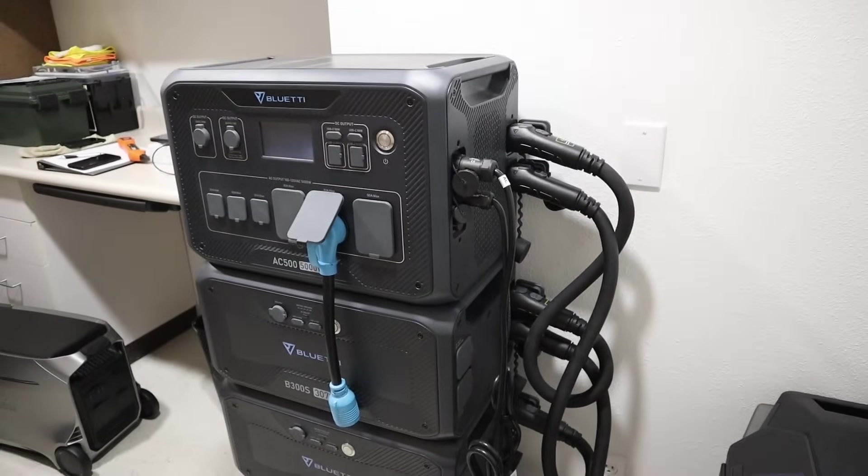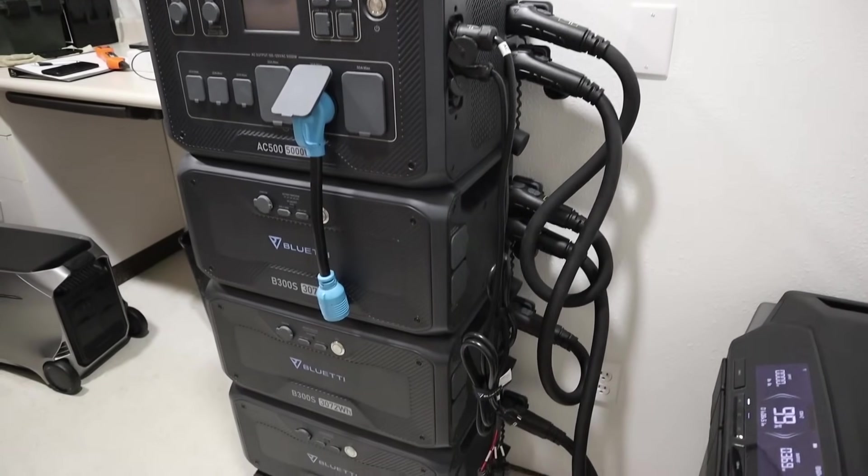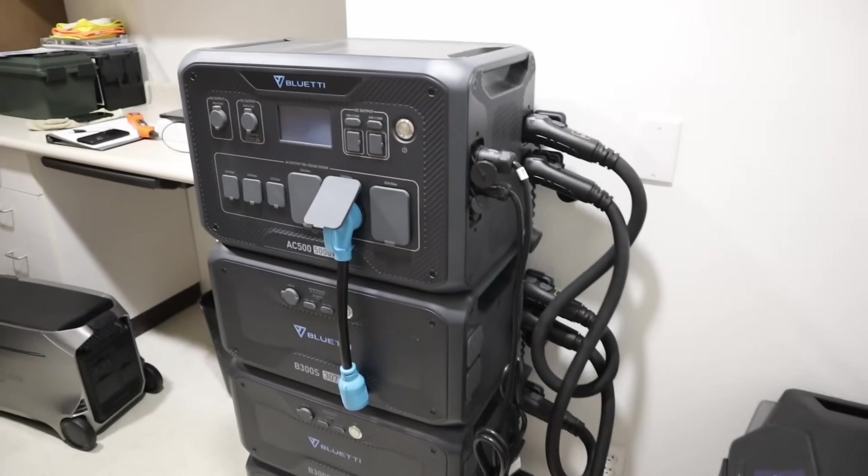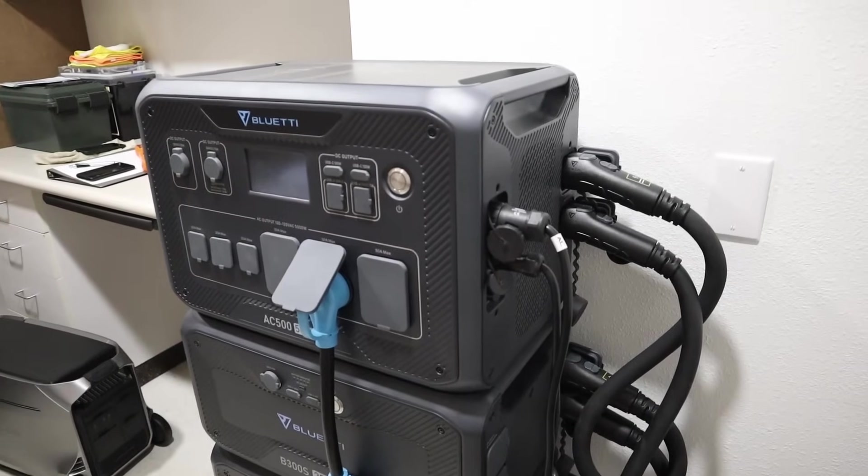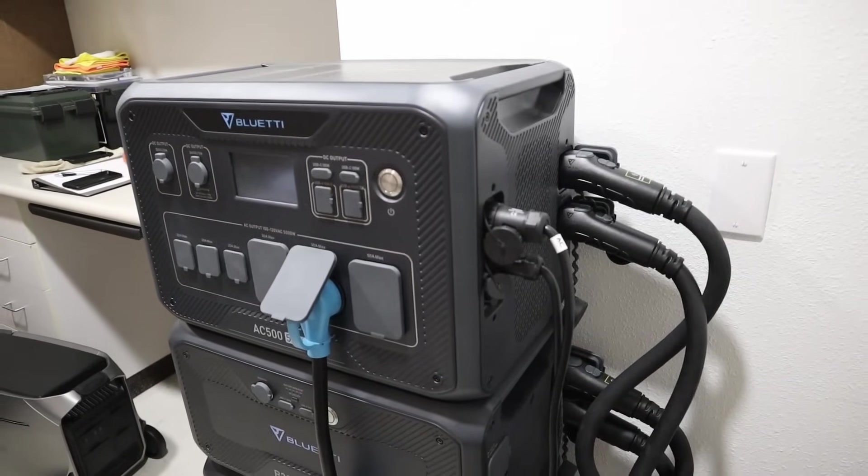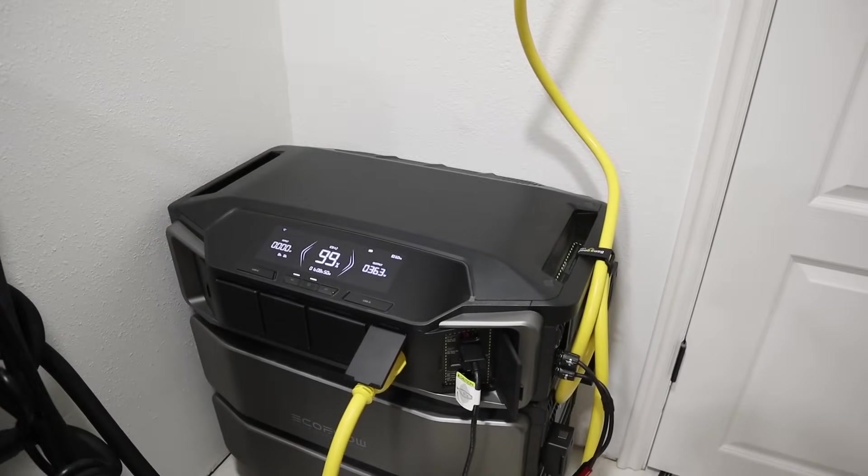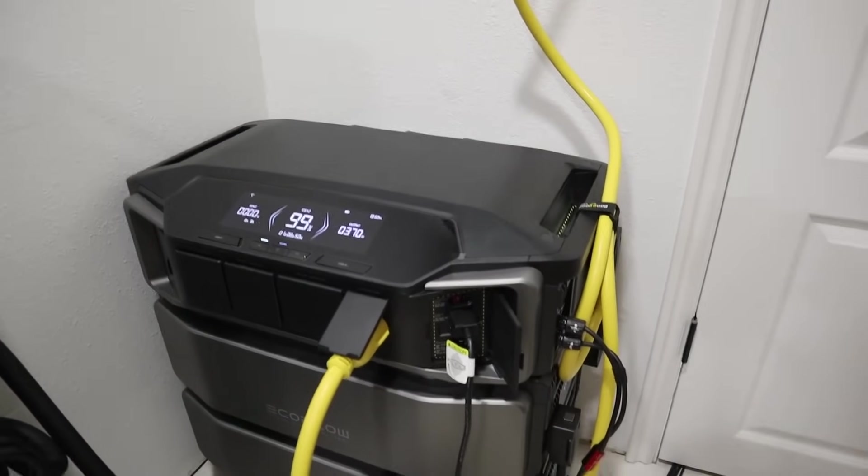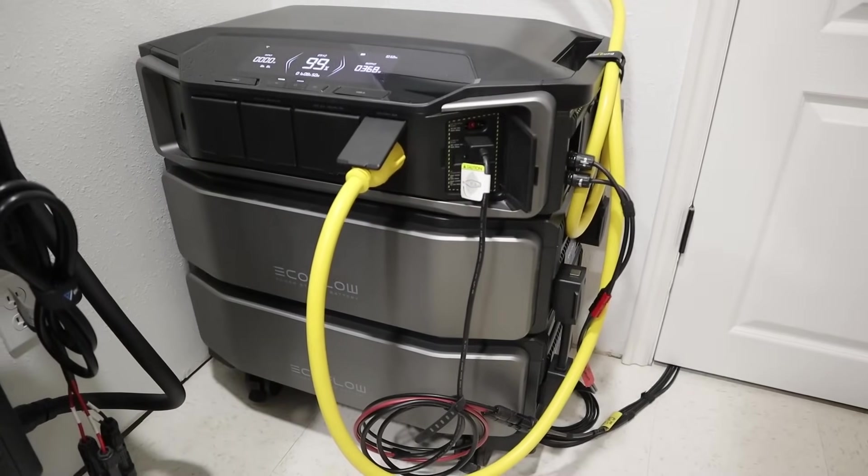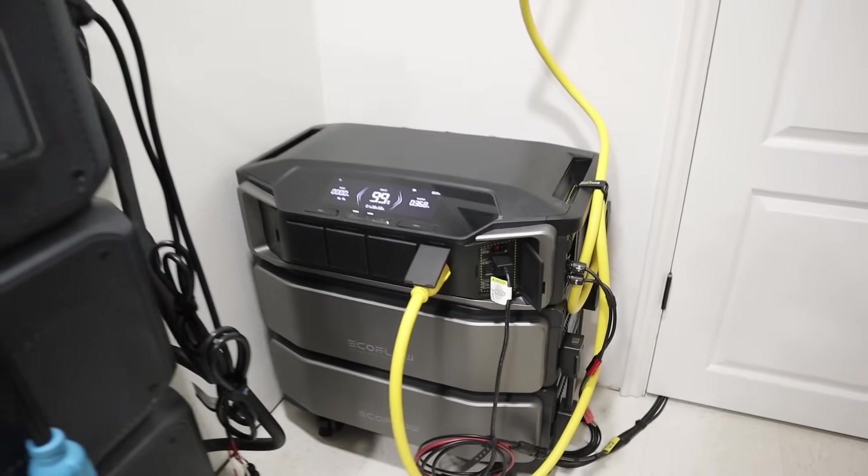These adapters here are what connect the inverter and batteries together. And they take about a foot of space on the side of the power station. This thing is quite tall and it is a little bit tipsy while I'm moving it around. To get split phase output on the AC500, I'd have to have two main head units and additional batteries. So you can see the size difference on the EcoFlow DPU. You have a 7200 watt split phase output and you even have 12 kilowatt hours of capacity. And it takes up less space.